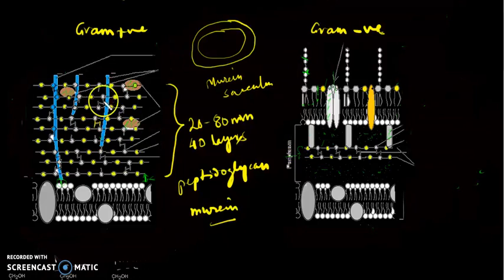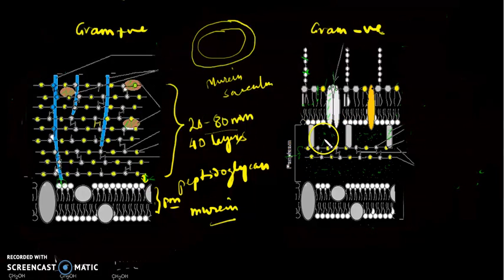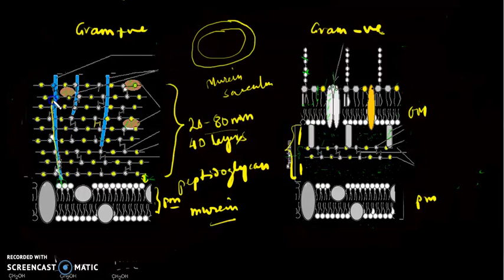In gram positive bacteria we find a thicker murein sacculus above the plasma membrane. There is literally no space left between the cell wall and the plasma membrane; the cell wall is almost adjoined to the plasma membrane. This space is quite distinct in the case of gram negative bacteria, where the space between the outer membrane and the plasma membrane is called the periplasmic space or periplasm — which is literally absent in gram positive bacteria.